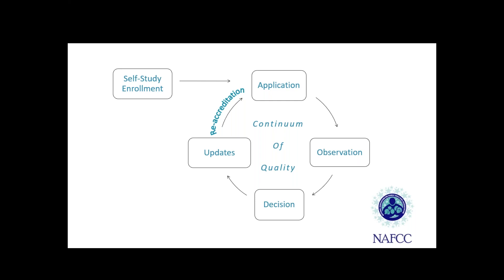During the observation piece — which we'll cover in depth today — the NAFCC trained observer conducts the on-site observation of your program and you. They'll gather information based on the quality standards and objectively document what they've observed. After that, we'll review their documentation along with everything you've sent us and data from the parent surveys to determine your accreditation status. If you pass, accreditation is awarded for a period of three years. The update process then offers a way for accredited providers to update NAFCC about their programs during that three-year period.